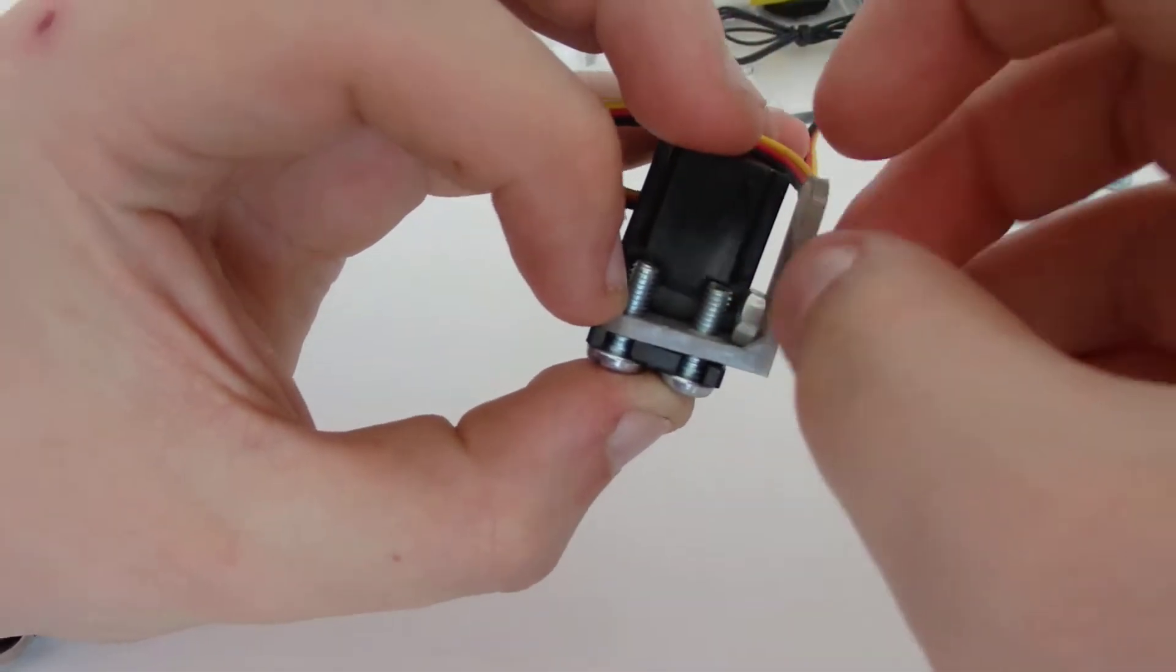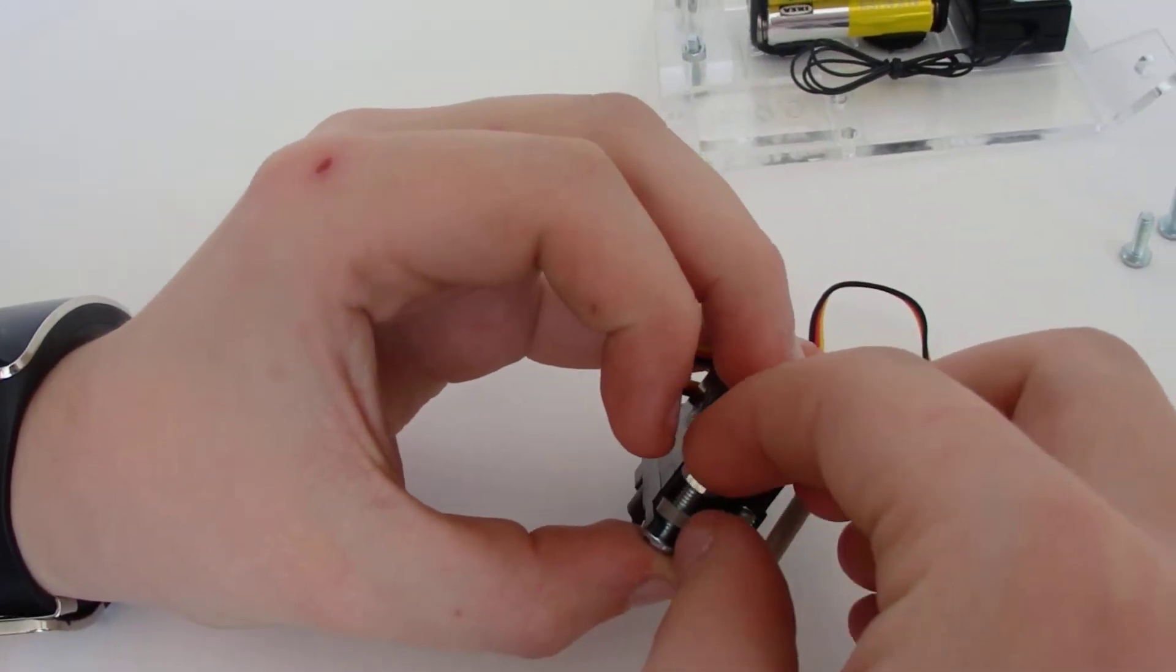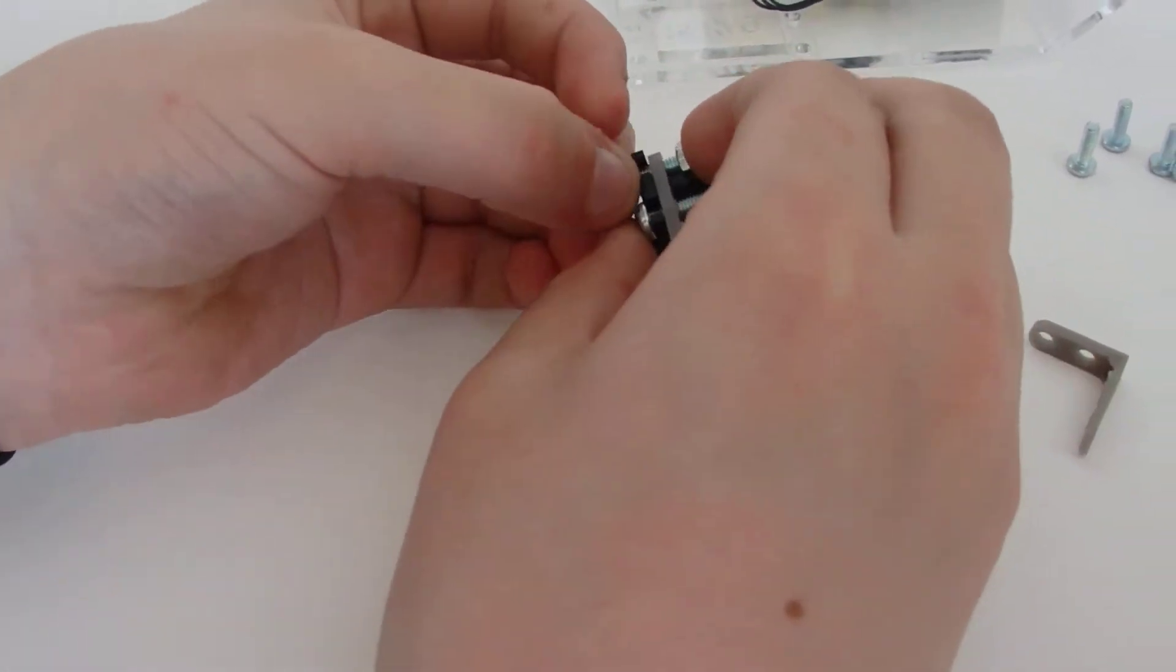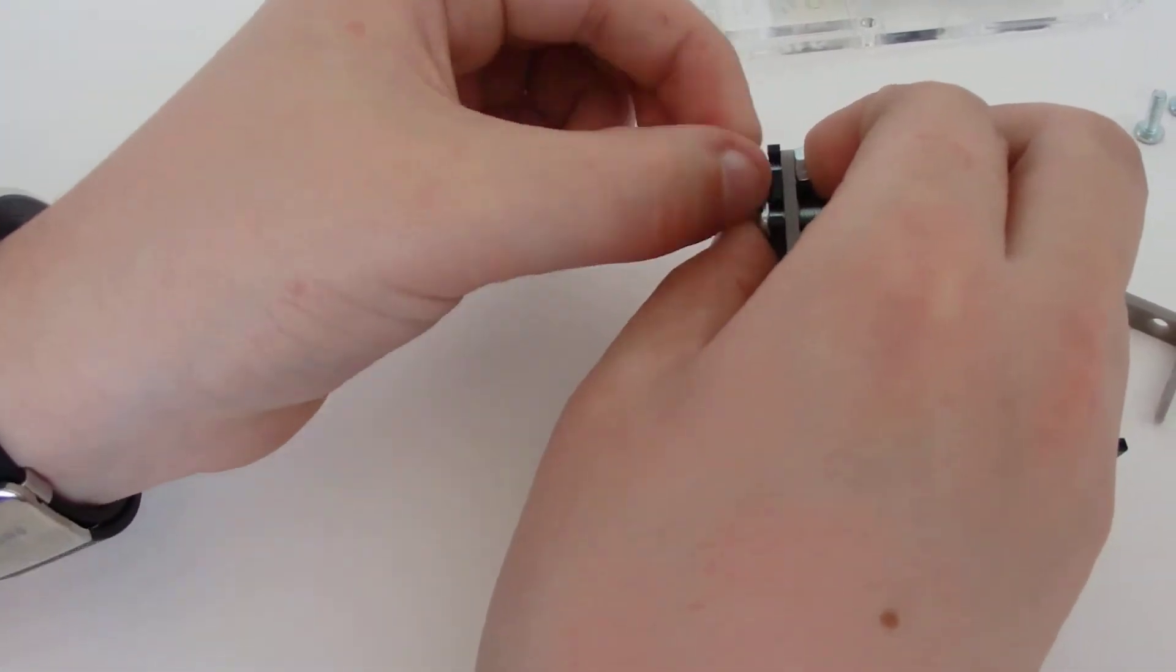We're just going to hand tighten, like on the previous video. We're just going to hand tighten these to start off with, then we're going to tighten them up with the screwdriver and the spanner.